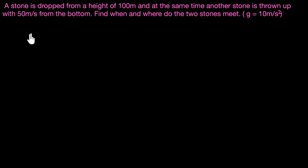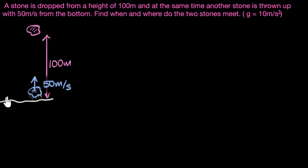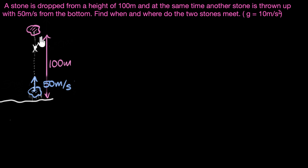Let's look at what's given and make a drawing. One stone is dropped from 100 meters, and at the same time another is thrown up with 50 meters per second from the bottom. If one stone is falling down and another is thrown up, they could meet somewhere. We need to figure out when — that means after how long after we've thrown and dropped them.